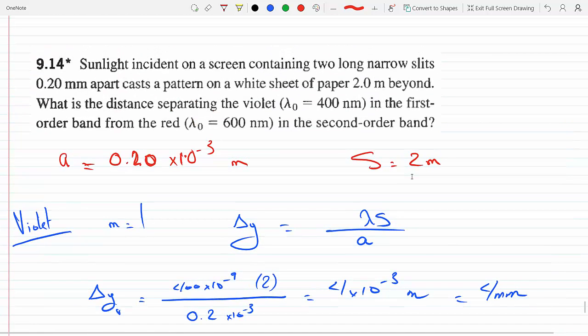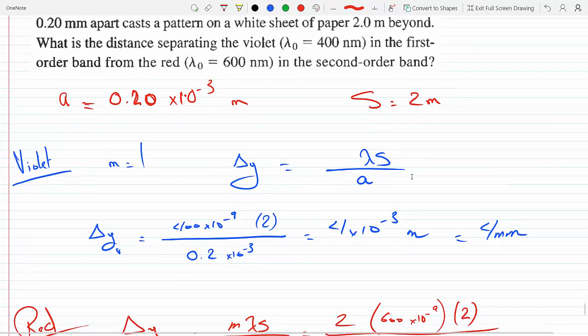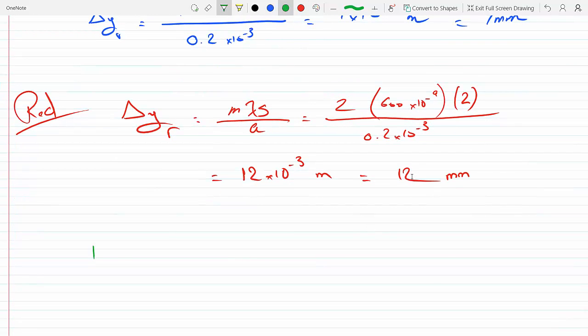So the question is asking for the distance separating the violet from the red, so the distance will be 4 millimeters.